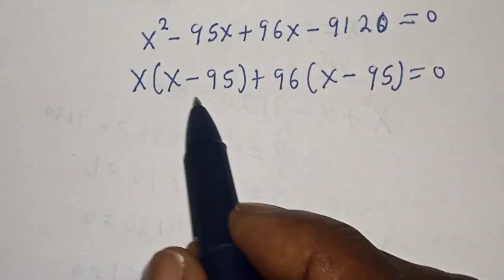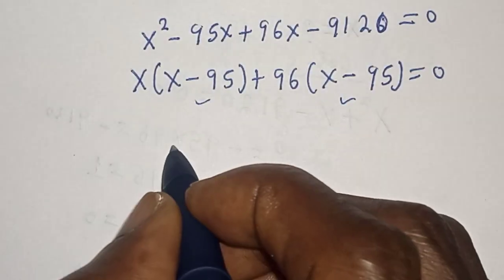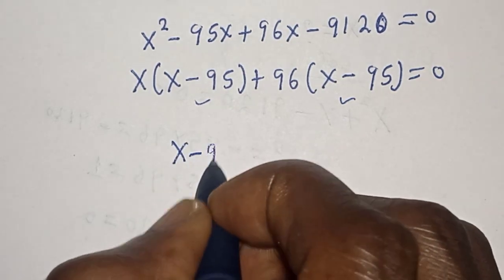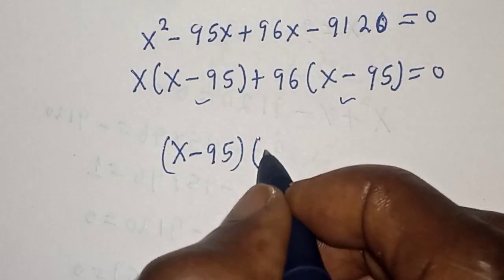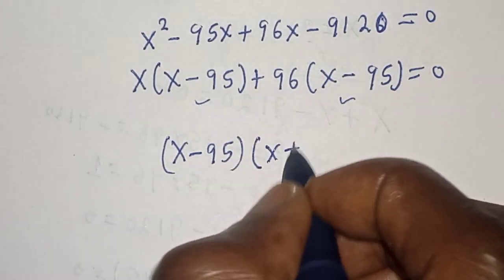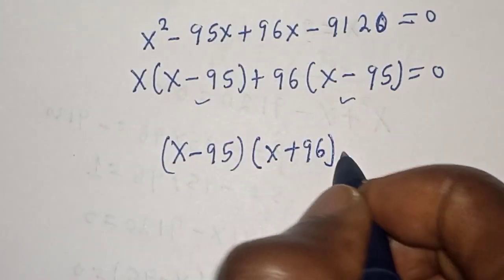Now x minus 95 is common here and it's common here. We have (x minus 95)(x plus 96) is equal to zero.